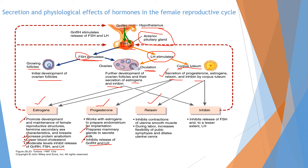Relaxin inhibits contraction of uterine smooth muscle during labor, increases the flexibility of the pubic symphysis, and dilates the uterine cervix. Inhibin inhibits the release of FSH and, to a lesser extent, also inhibits the release of LH.